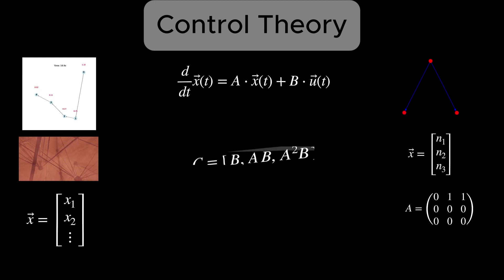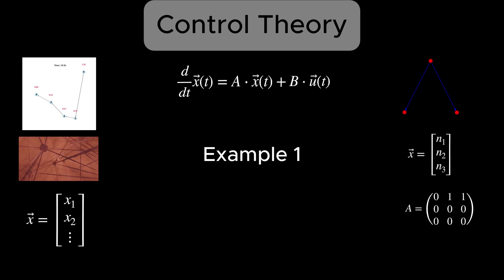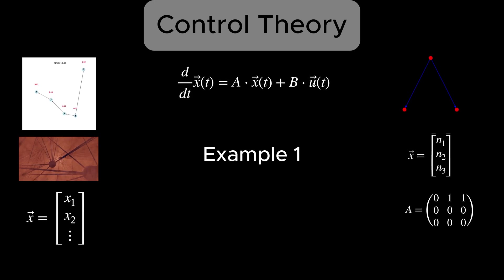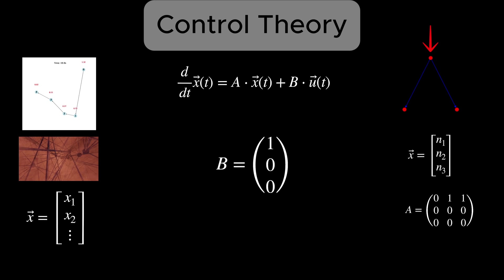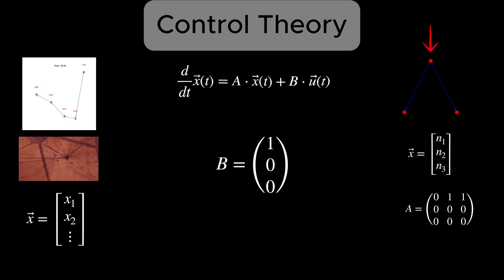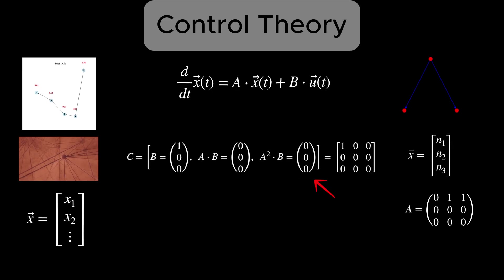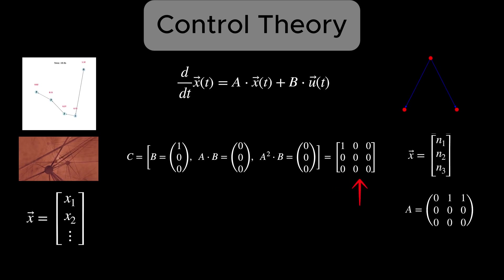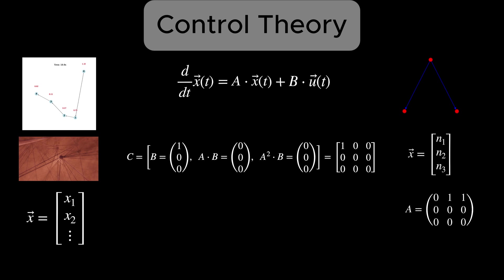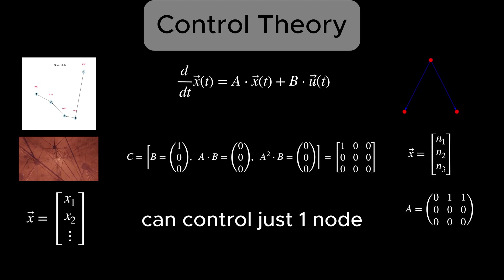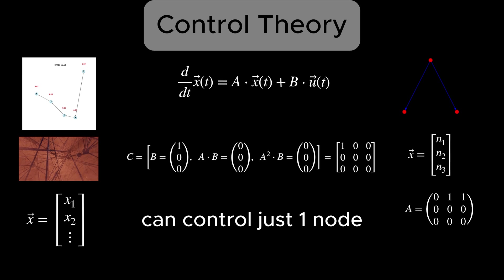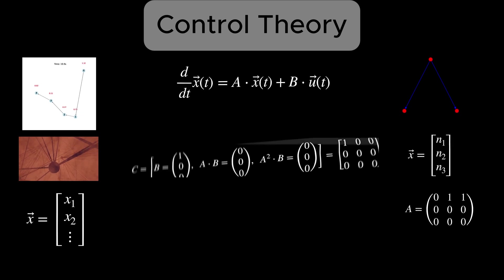Let's now see the controllability of the system in two examples of external inputs. First, suppose we only apply an external input to node N1. That means our matrix B is... So, U enters directly into the first neuron only. And here are the individual components of the matrix C. Putting these side by side, C will turn out to be this matrix. The rank of this matrix is 1. Therefore, we can't control the entire three-dimensional state. In other words, we can only affect the first node but can't steer the other two nodes where we want. They remain out of our control.